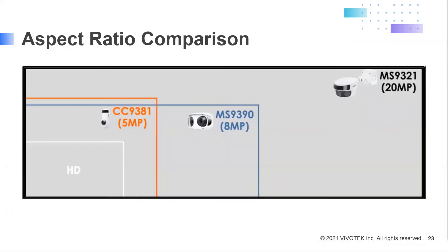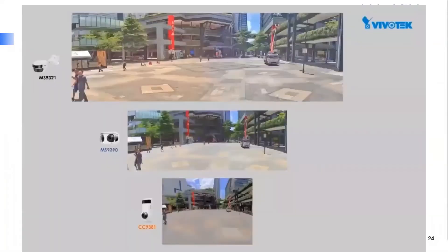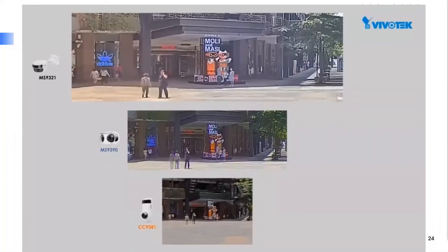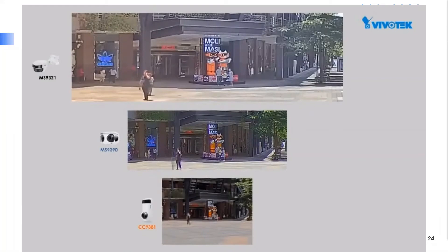Here's an example of the aspect ratio and how it compares between these 180 degree cameras in the 9000 series. In a large open area, all three cameras captured the entire scene. However, the MS9321 is the better choice in this application given the extensive detail provided throughout the entire 180 degree range and the ability to capture detail located farther away.